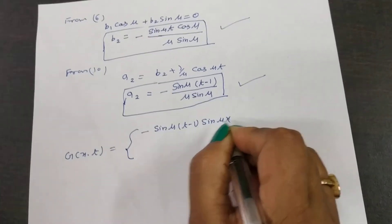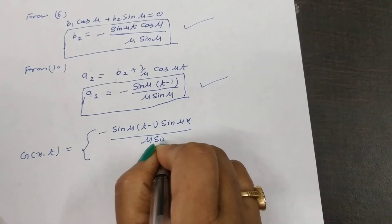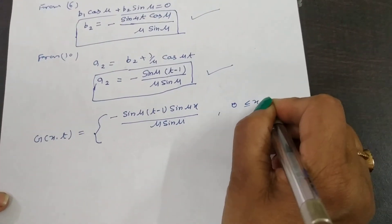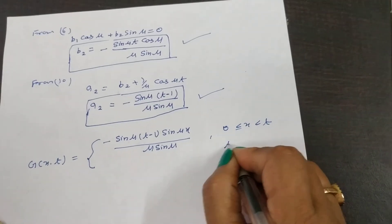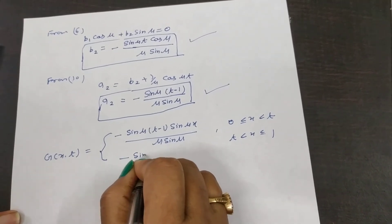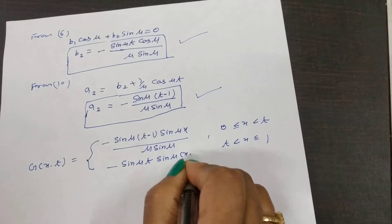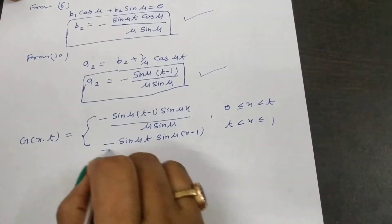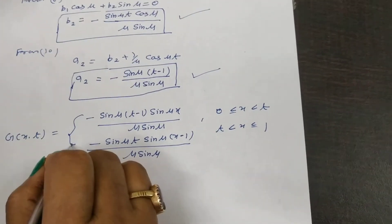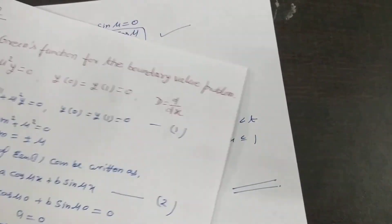The Green's function is: G(x,t) = minus sin(μt) · sin(μx minus 1) divided by μ sin(μ), for 0 ≤ x < t, and minus sin(μt) · sin(μx minus 1) divided by μ sin(μ), for t < x ≤ 1.